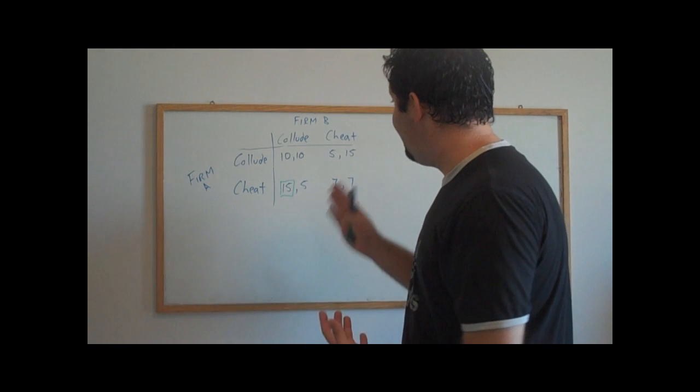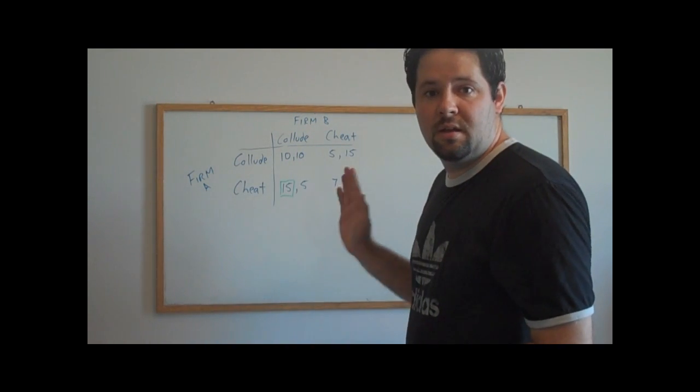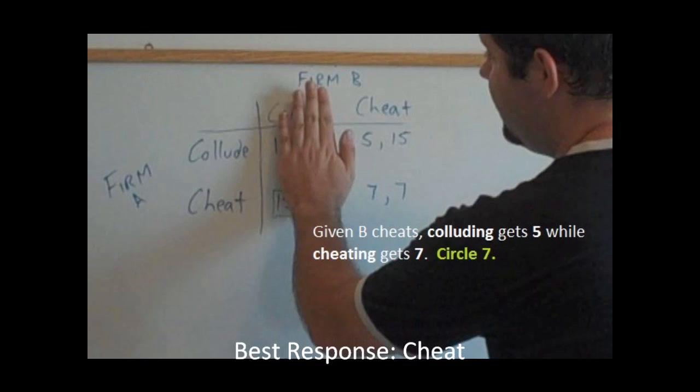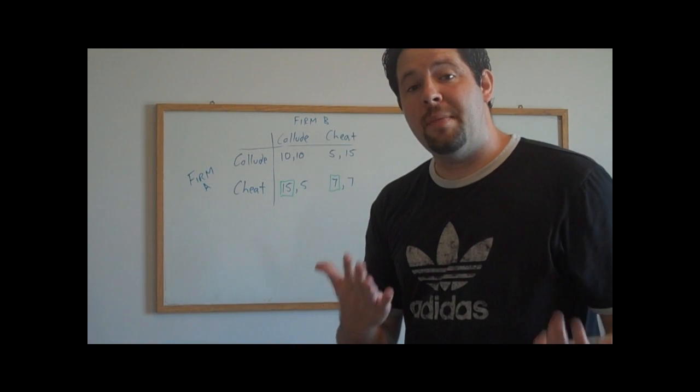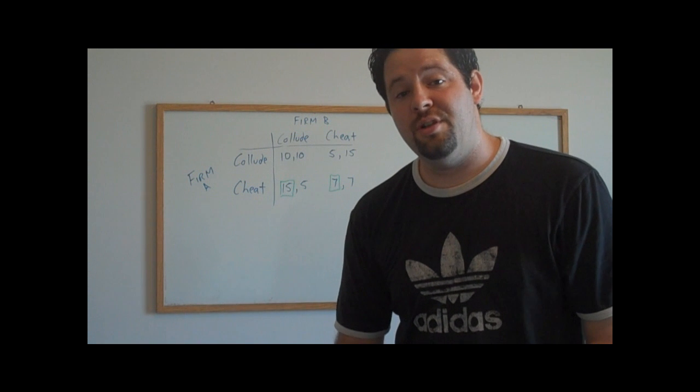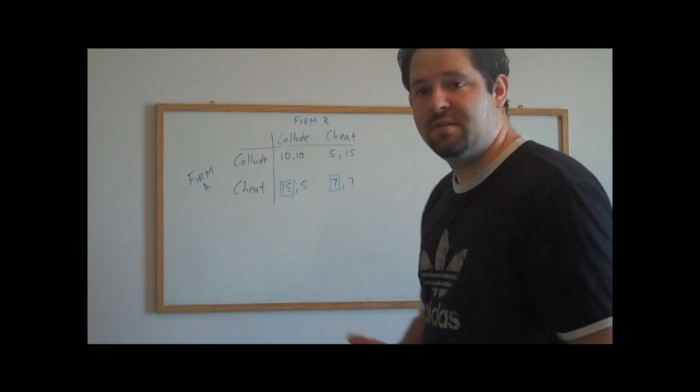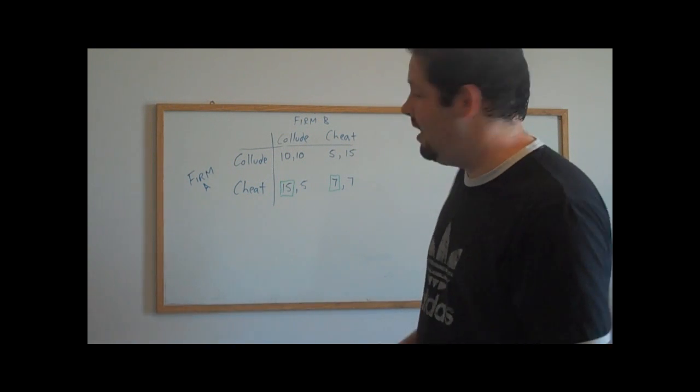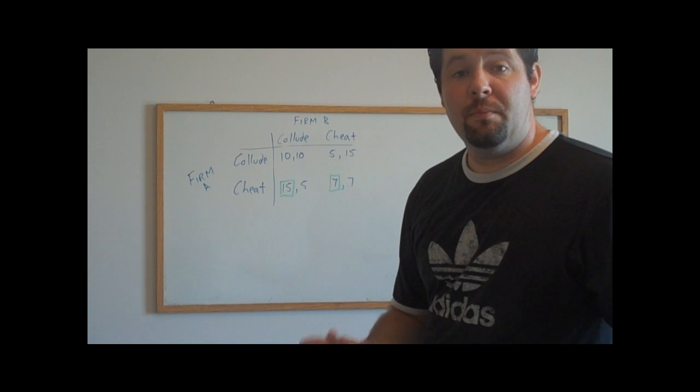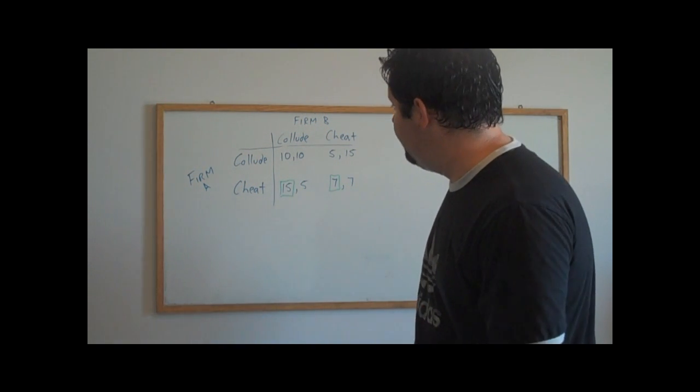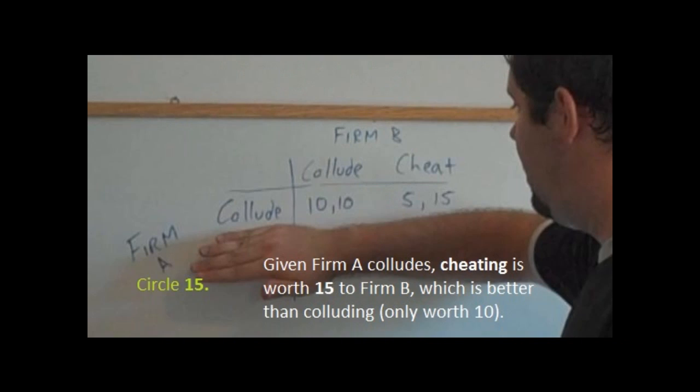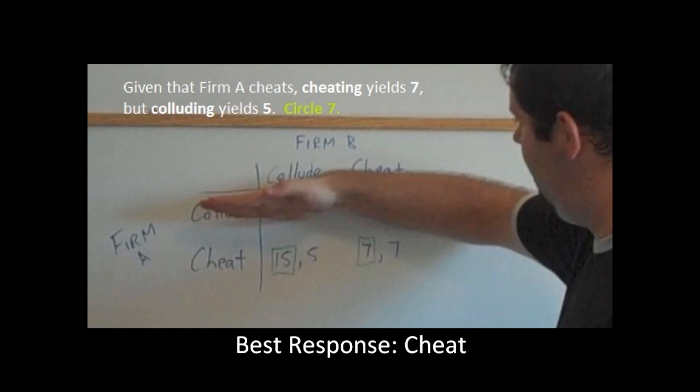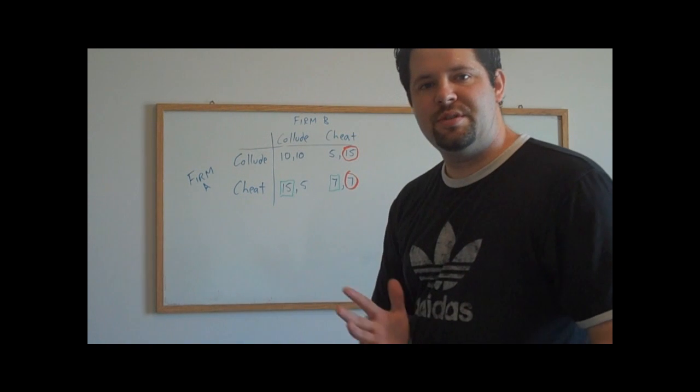We are not done yet. We need to also consider, well, what happens if firm B doesn't collude, but in fact, cheats? Now, we've analyzed firm A's decisions, given what firm B's potential actions are. We can do the same for firm B, just put ourselves in firm B's shoes. Remember, firm B's payoffs are the second numbers in these cells, and so we can analyze firm B very symmetrically, just covering up the rows to determine what firm B is actually going to do. So, imagine that firm A colludes, what is firm B's best choice?